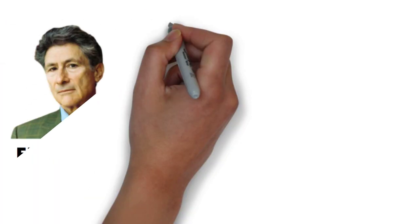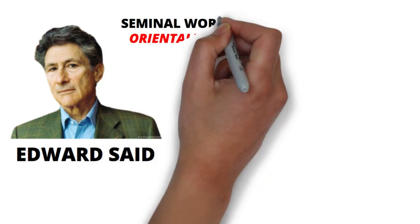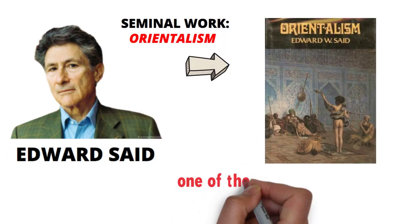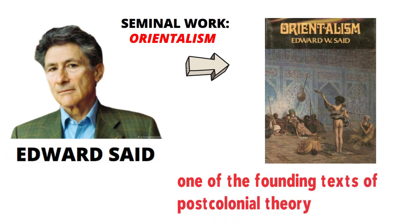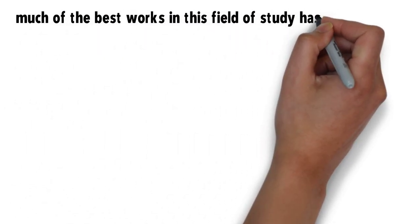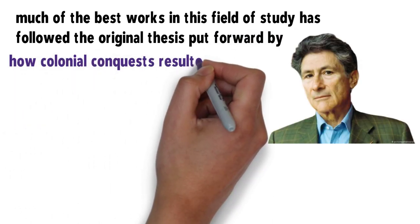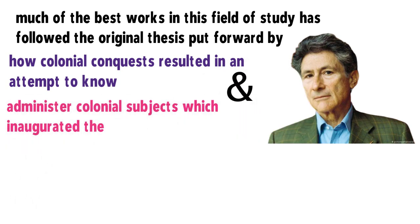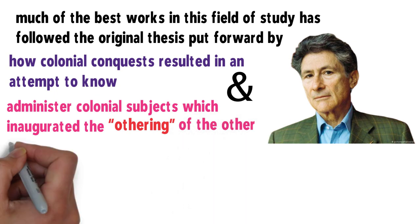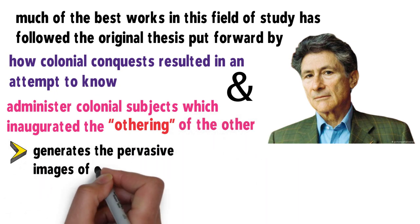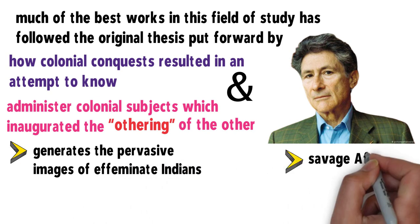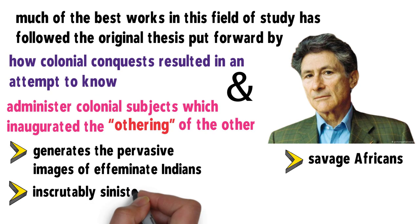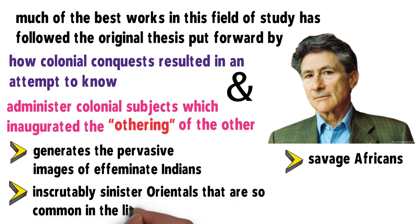Most postcolonial theories consider Edward Said's seminal work titled Orientalism as one of the founding texts of postcolonial theory. In fact, much of the best work in this field has followed the original thesis put forward by Said on how colonial conquests resulted in an attempt to know and administer colonial subjects, which inaugurated the othering of the other—generating pervasive images of effeminate Indians, savage Africans, and inscrutably sinister Orientals that are so common in the literature of empire.